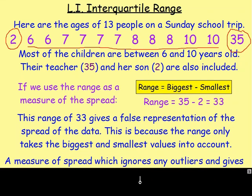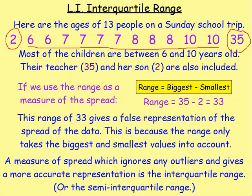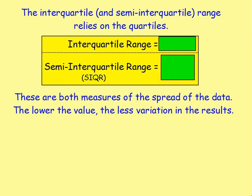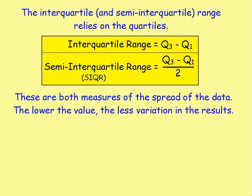So we need a way to kind of ignore the outliers, and the way we do that is by using the interquartile range or the semi-interquartile range. They are measures of the spread of the data, but what they do is they ignore the outliers — they ignore the lower 25% of the numbers and the upper 25% of the numbers. To do that, they use quartiles, which we looked at in the last lesson. The interquartile range is just Q3 take away Q1. For the semi-interquartile range — think about 'semi': a semi-circle is half a circle — so it's just Q3 take away Q1, divided by 2.